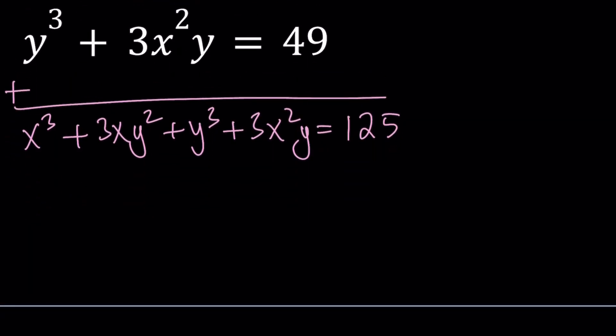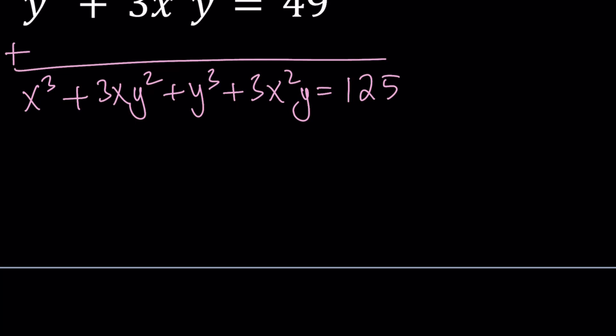So having 125 on the right hand side is nice because it's a perfect cube, so everything is perfect. Now let's go ahead and arrange these terms so they look better. x cubed plus 3x squared y plus 3xy squared plus y cubed equals 125. Now, if you said that the left hand side is equivalent to x plus y quantity cubed, then you're right.